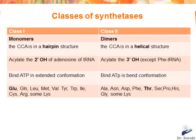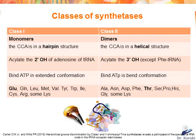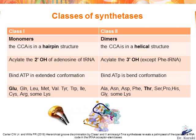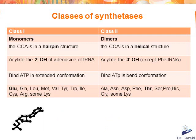The CCA part of the acceptor stem in class I is in a hairpin structure, while in class II it is in a helical structure. Class I synthetases bind ATP in an extended conformation — you can see how the black structure is extended — while class II synthetases bind ATP in a bent conformation, where the black structure is bent.